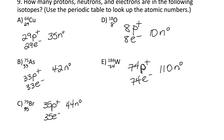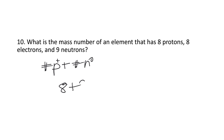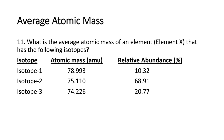And that's all there is to it. Hopefully you guys get this one. What is the mass number of an element that has 8 protons, 8 electrons, and 8 or 9 neutrons? The mass number is the number of protons plus the number of neutrons. So that means it's 8 plus 9, so the mass number is 17.